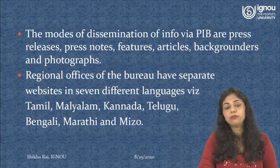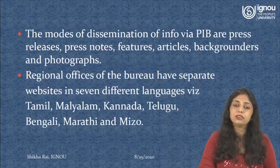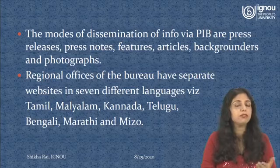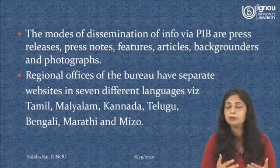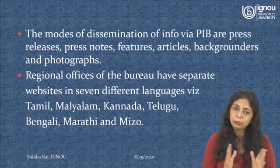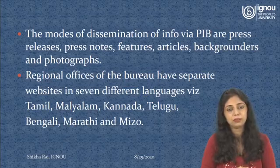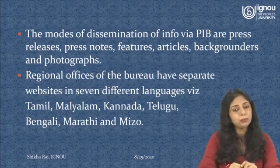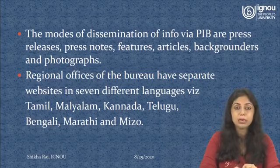The modes of dissemination of information via PIB are press releases, press notes, features, articles, background design, and photographs. These are the various ways the Press Information Bureau disseminates its information to various wings of the government or to the press and media in general. The regional offices of the Bureau have separate websites in seven different languages: Tamil, Malayalam, Kannada, Telugu, Bengali, Marathi, and Mizo.